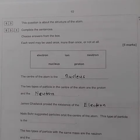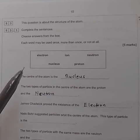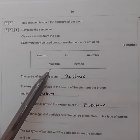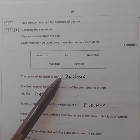Question number three. The question is about the structure of the atom. Complete the sentences. Choose answers from the box. Each word may be used once, more than once, or not at all. So the words are electron, ion, neutron, nucleus, and the proton.